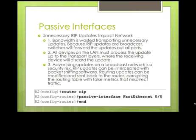RIPv2 supports passive interfaces, just like RIPv1 did. We want to turn our interfaces passive if there is no need to send updates out of them. If there is no router on the other end, there is no reason to send an update out that interface — we want to make them passive.